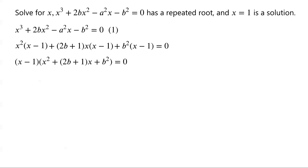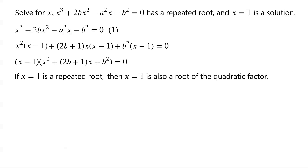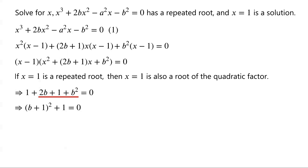We are given that the cubic equation has a repeated root. If we assume X equals 1 is a repeated root, then X equals 1 must also be a root of the quadratic factor. Substituting X equals 1 into the quadratic factor gives 1 plus 2B plus 1 plus B squared equals 0, which simplifies to (B plus 1) squared plus 1 equals 0. This is impossible because B is a real number. Thus X equals 1 cannot be a repeated root.